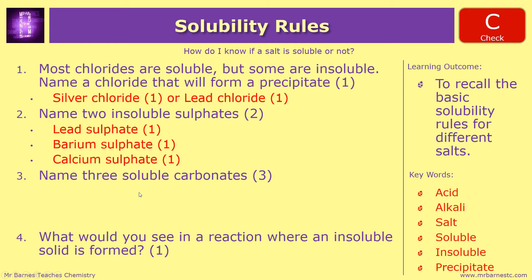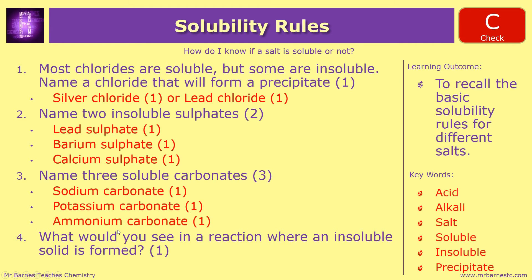Name three soluble carbonates - those are the three main exceptions from the top of that row, the ones that are all soluble: sodium carbonate, potassium carbonate and ammonium carbonate. And finally, what would you see in a reaction where an insoluble salt is formed? Your answer is a precipitate.